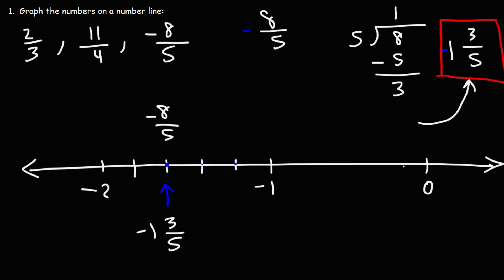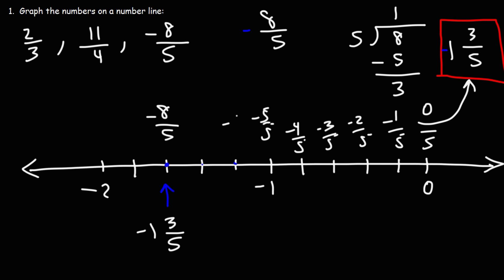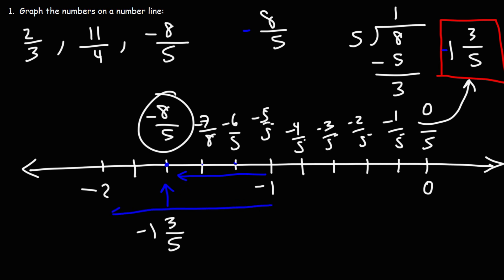Here's another way to see it: draw 5 equal spaces between 0 and negative 1, and count out negative 1/5, negative 2/5, negative 3/5, negative 4/5, negative 5/5, negative 6/5, negative 7/5, and then negative 8/5. But once you have the mixed number, starting from negative 1, you travel 3 spaces toward negative 2 out of the 5 available spaces. There are many ways to see it.